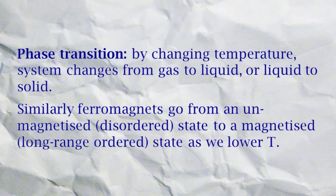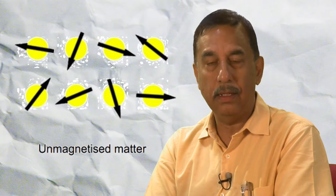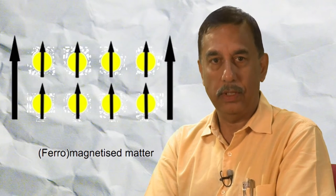A phase transition is when a system changes its phase. We are familiar with liquids going to solids or gases going to liquids as we vary temperature. Another kind of phase transition is when magnets go from an unmagnetized or disordered high temperature state to an ordered magnetized low temperature phase. In this transition, the spins which are randomly pointing in different directions all line up in one direction.